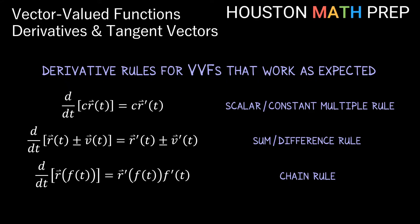There are lots of rules that will look new to you when differentiating vector-valued functions, but these really work as you'd expect if you remember their counterparts from derivatives of scalar functions. We have a scalar multiple rule, which looks the same as the constant multiple rule from Calculus 1. We also have a sum and difference rule for addition or subtraction between multiple vectors — just differentiate each vector and add or subtract. The chain rule also applies if we're substituting a scalar function into a vector-valued function.